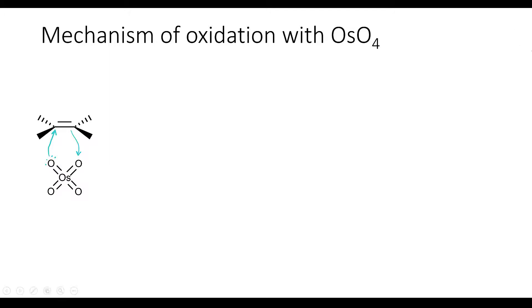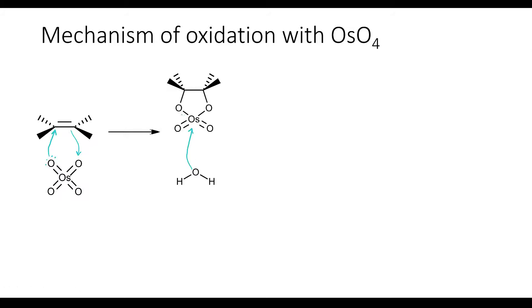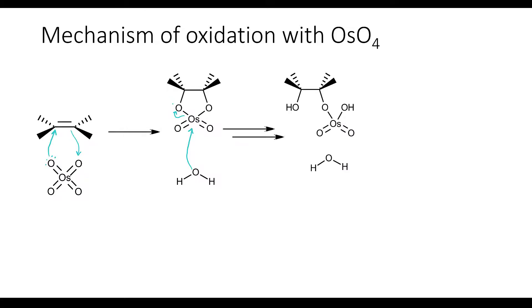This results in the formation of a five-membered osmate ring. If exposed to water, the water molecule will attack the osmium atom, then the bond between osmium and the oxygen on our hydrocarbon will break, and the osmium will give up its oxygen to the hydrocarbon. After some proton exchanges, we're going to get an alcohol on that side.